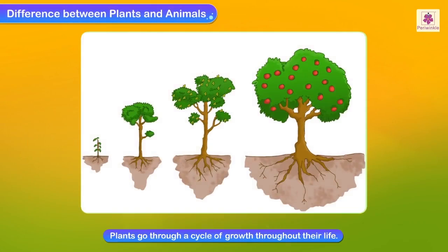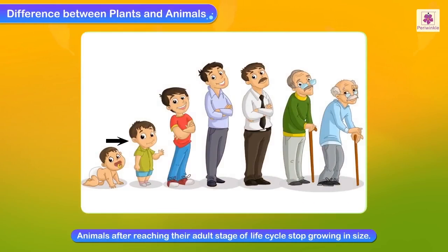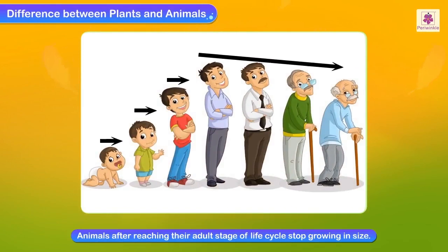Plants go through a cycle of growth throughout their life, in the form of development of branches, flowers, and new leaves. Animals, after reaching their adult stage of the life cycle, stop growing in size.